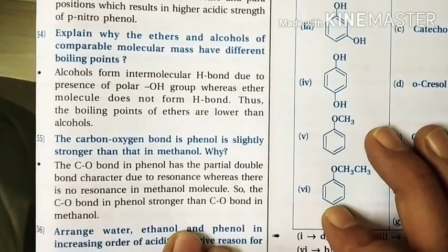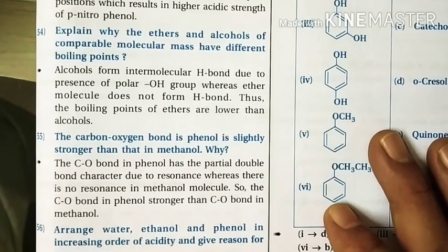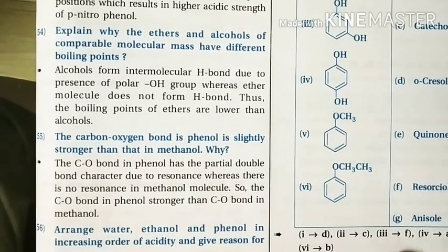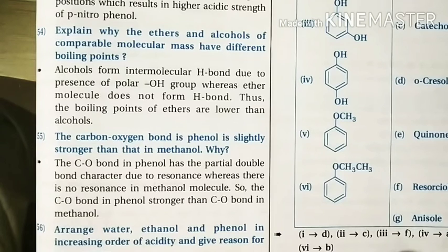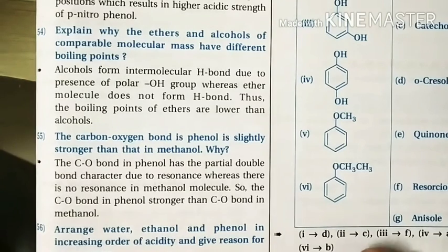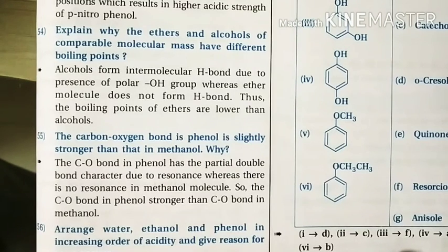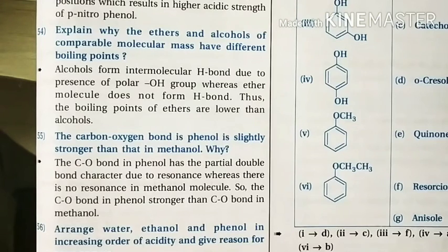Question 54: Why do ethers and alcohols of comparable molecular mass have different boiling points? Alcohols undergo intermolecular hydrogen bonding and exist as associated molecules. Ethers do not have a hydrogen atom on oxygen, so they do not form hydrogen bonds and exist as discrete molecules held only by weak dipole-dipole attractions. Lesser energy is required to break these weak attractions than hydrogen bonds in alcohols; therefore, boiling points of alcohols are much higher than those of ethers of comparable molecular mass.